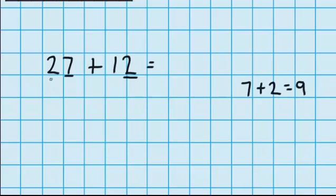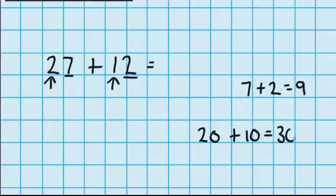Now I'm going to move on to my 10's. I've got 2 tens and here I've got 1 ten, so that's 20 plus 10. I know that 20 plus 10 is 30. So now I've added all the 10's together and all the 1's together. Now I just need to combine these amounts: 30 plus 9 equals 39.